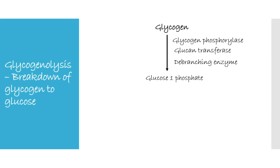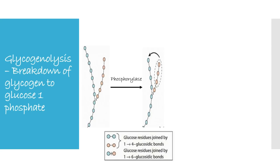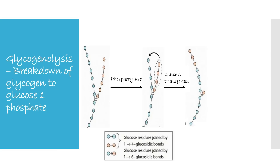In glycogenolysis, glycogen is broken down to glucose-1-phosphate by three enzymes: glycogen phosphorylase, glucan transferase, and debranching enzyme. Glycogen phosphorylase hydrolyzes alpha-1,4 glycosidic linkages and removes terminal glucose residues from the outermost chain until four glucose residues remain. Glucan transferase then transfers a trisaccharide unit from one branch to another, exposing the alpha-1,6 glycosidic branch point. Debranching enzyme hydrolyzes the alpha-1,6 glycosidic linkage.